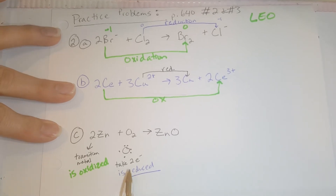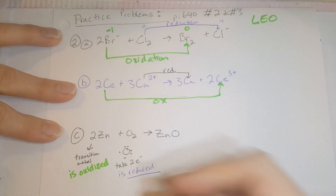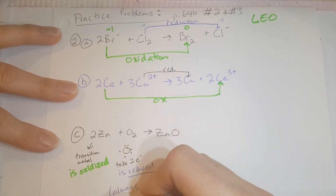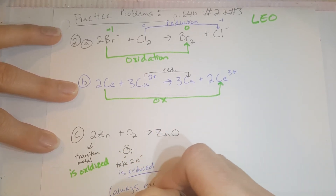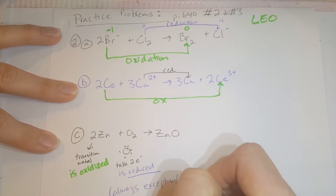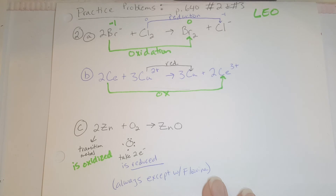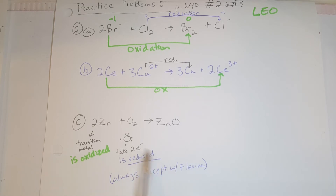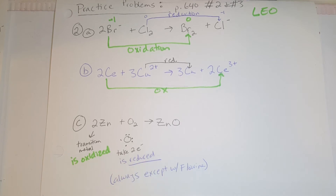Oxygen undergoing reduction is almost always true, except when it's with fluorine. Fluorine is the only element more electronegative than oxygen, so in that case oxygen will actually be the oxidized substance. But other than when it's with fluorine, oxygen is always going to be the thing that's reduced — it always takes the electrons.